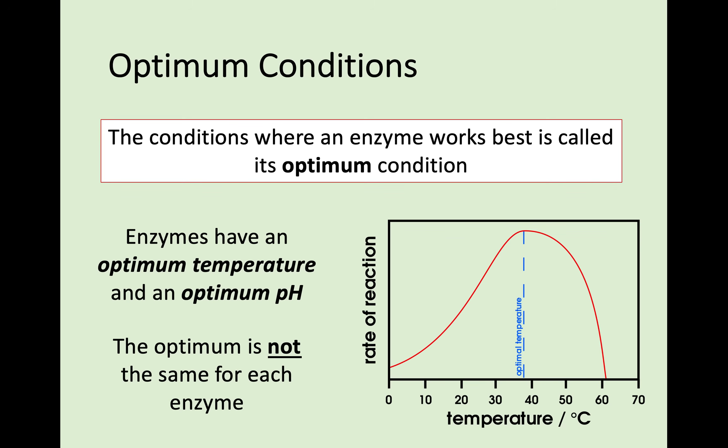No matter what enzyme reaction takes place, we want to look at the conditions where an enzyme works best — this is called its optimum conditions. Enzymes have both an optimum temperature and an optimum pH, and the optimum is not the same for each enzyme. For example, amylase works in your mouth, but some enzymes work in your stomach acid, which has a very different, much more acidic pH. Looking at the graph, as temperature increases, the rate of reaction increases until it reaches its very peak — that is its optimum point, the optimum temperature.